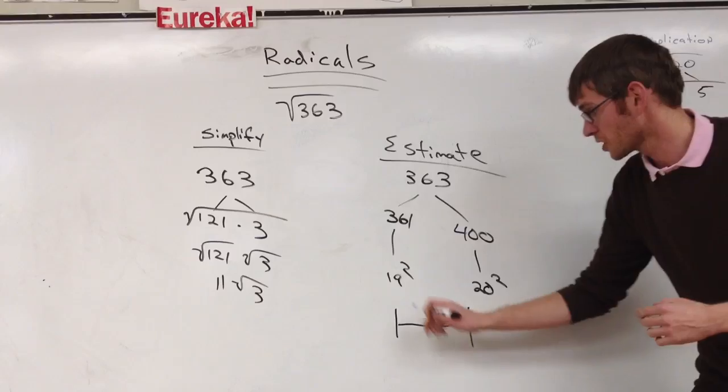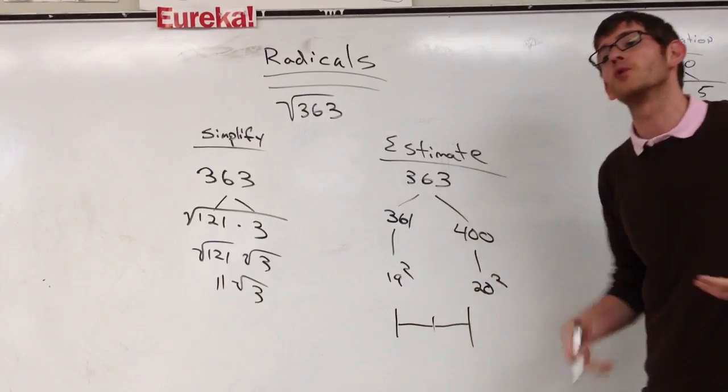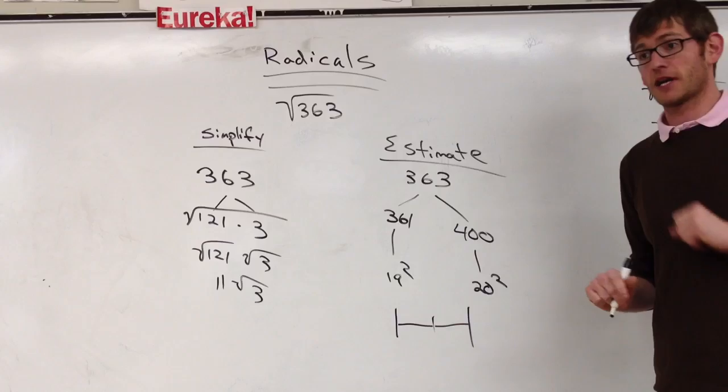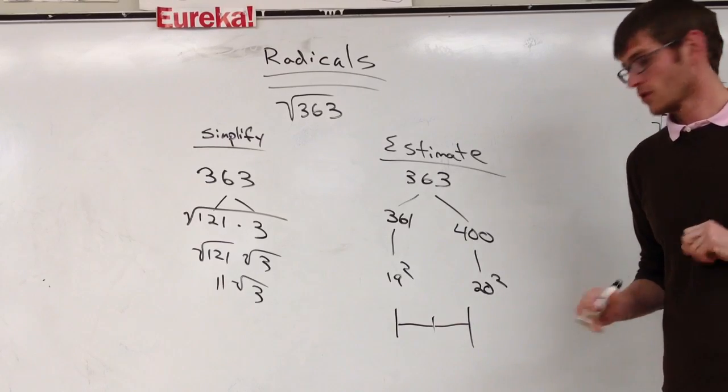361. So it's going to be closer to 19, right? So what would you estimate the square root of 363? 19.2.